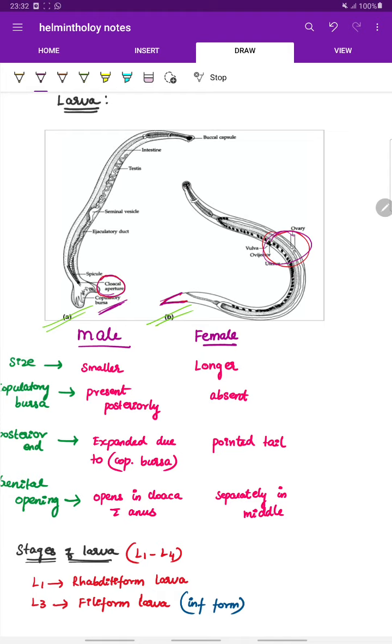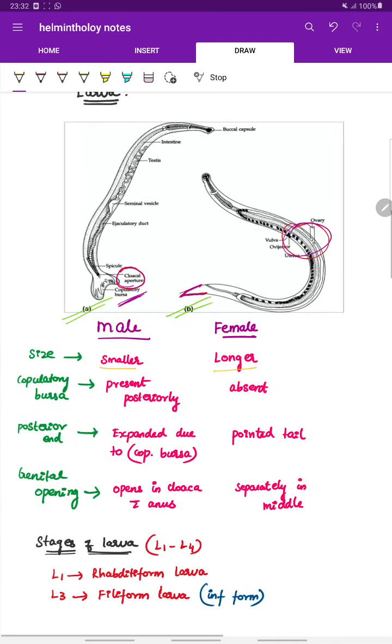Difference between the male and female larva: male is smaller in size compared to female which is longer. Copulatory bursa is present posteriorly in case of male but absent in female. Posterior end is expanded in male and pointed tail in case of female. Genital opening opens in the cloaca with anus in males and the genital opening is separate in the middle in case of females.